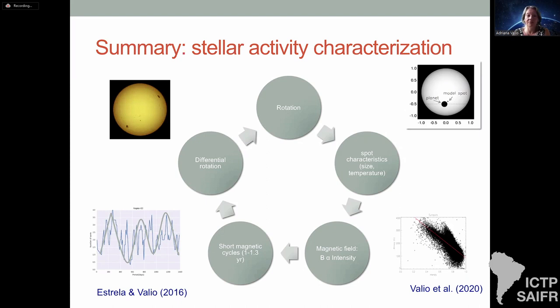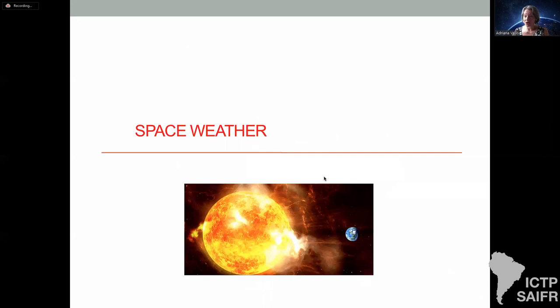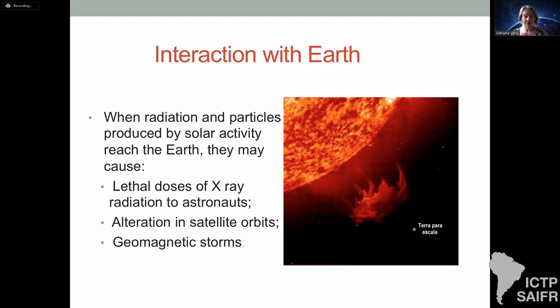In summary, from stellar activity characterization we can estimate stellar rotation; physical characteristics of spots such as size and temperature; and by applying the sun-spot magnetic field intensity relation we can infer magnetic field strengths in star spots. We can also measure short magnetic cycles — limited by the observation length, which in the case of Kepler was four years — and differential rotation.